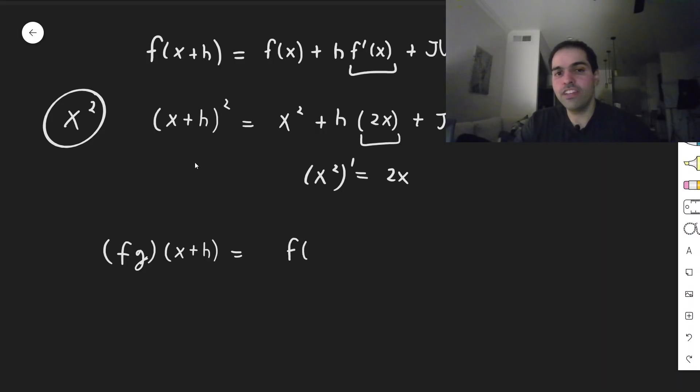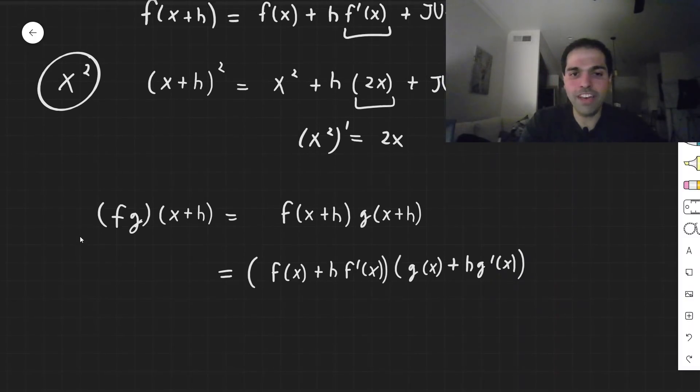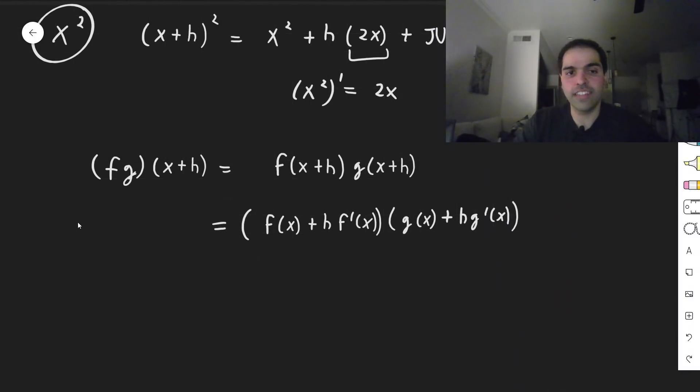Then, by definition, this is f of x plus h times g of x plus h. But now, just use this identity. So f of x plus h is f of x plus h f prime of x, plus some junk, but let's ignore that. So let's put on our applied math hat for a second, just to make this elegant. And same for g: g of x plus h g prime of x. And now let's just foil this out.